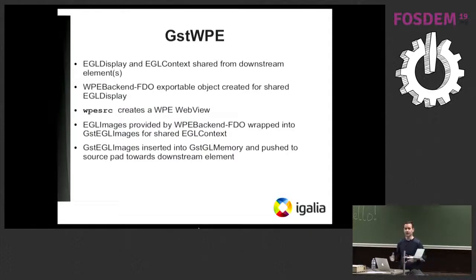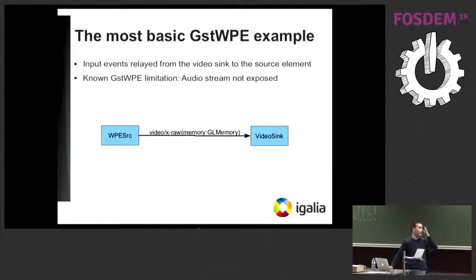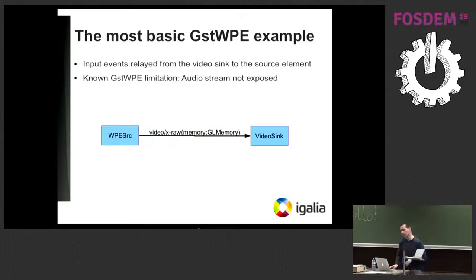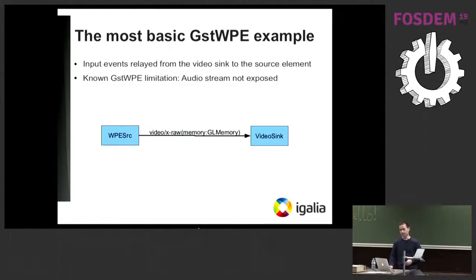Those GST EGL images are pushed downstream toward the sink — the video sink or other elements. The most basic example is essentially a web browser using a GStreamer pipeline: video frames generated by the source element are pushed to the video sink. Input events coming from the video sink, like scrolling or mouse events, are forwarded upstream to the source element and then back to WebKit so you can scroll the page and it will affect the video frames. One limitation is that right now the source element pushes only video frames, so there's no audio support yet.